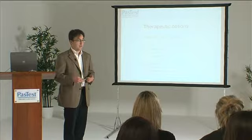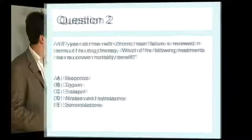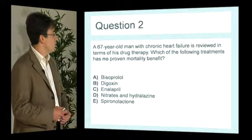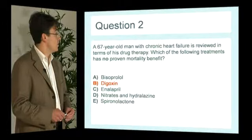Moving on to question two: a 67-year-old man with chronic heart failure is reviewed in terms of his drug therapy. Which of the following treatments has no proven mortality benefit? If you answered B, digoxin, you'd be absolutely correct.